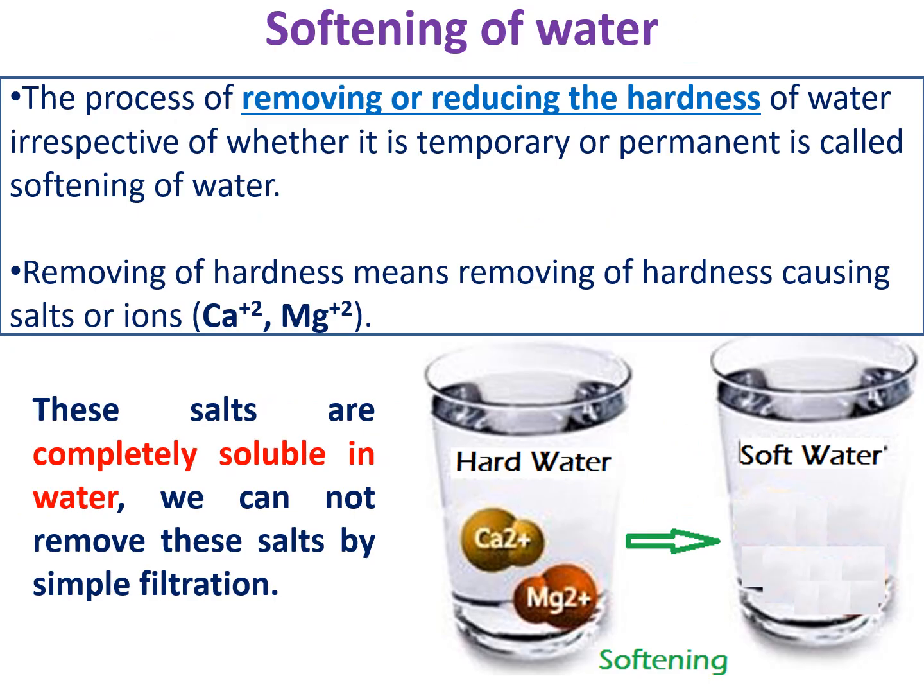So what is softening of water? The process of removing or reducing hardness-causing salts present in water is called softening of water. This is irrespective of whether it is temporary or permanent hardness. Removing the total hardness from water is called the softening method. The ions that cause hardness are calcium (Ca²⁺) and magnesium (Mg²⁺). If you remove the calcium and magnesium salts from water, that is equal to softening of water.